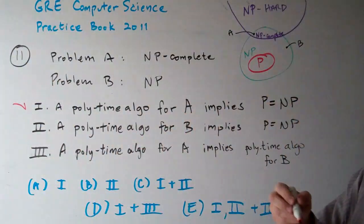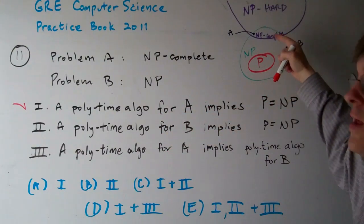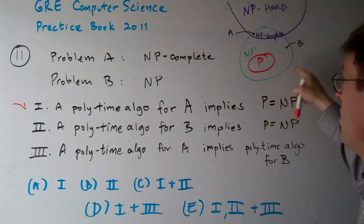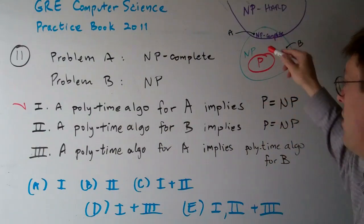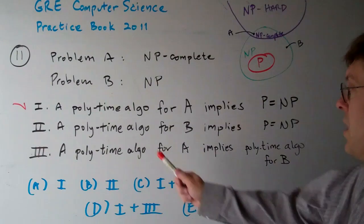One is true because if there were a polynomial time algorithm for A, then we know that all of these problems, P, NP, and all of them, they're all the same. They have polynomial time solutions for all of them.